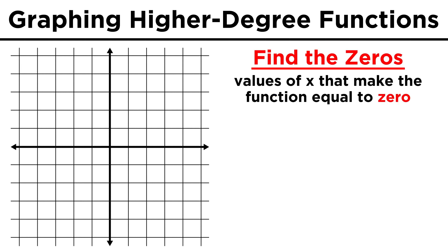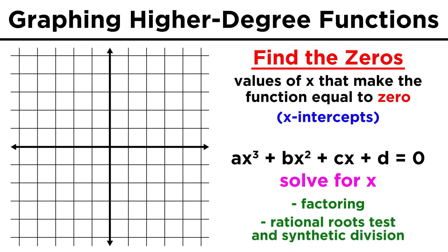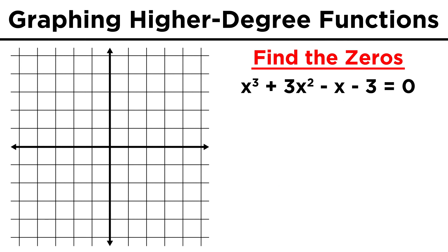Now that we have the end behavior, the next thing to do is to find the zeros of the function. These will be the values of X that make the function equal to zero, which can be understood graphically as X intercepts, because these are points where Y equals zero. To get these, we set the function equal to zero and solve for X. This can be very tricky, but sometimes a little factoring will do it. Other times we have to use the rational roots test in conjunction with synthetic division to find the zeros — we learned this technique earlier in the series.